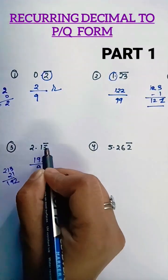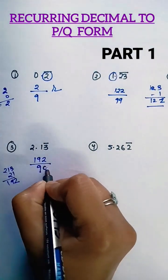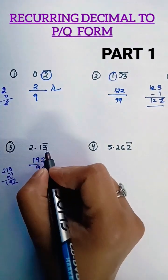And I will also see, without bar after decimal, no digit should remain. So one digit is there without bar, so I will put a 0 for that. So always remember, however many digits are under bar, write that many 9s.